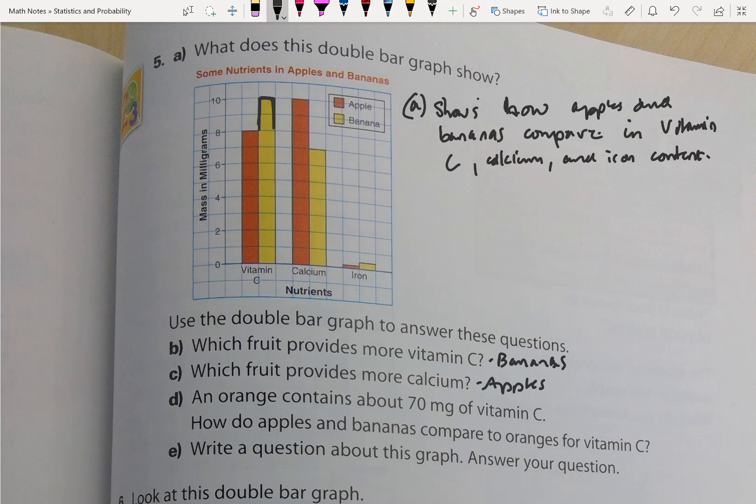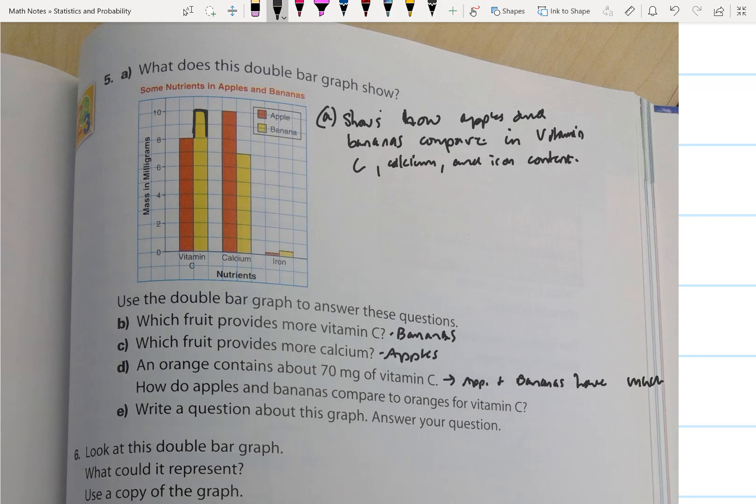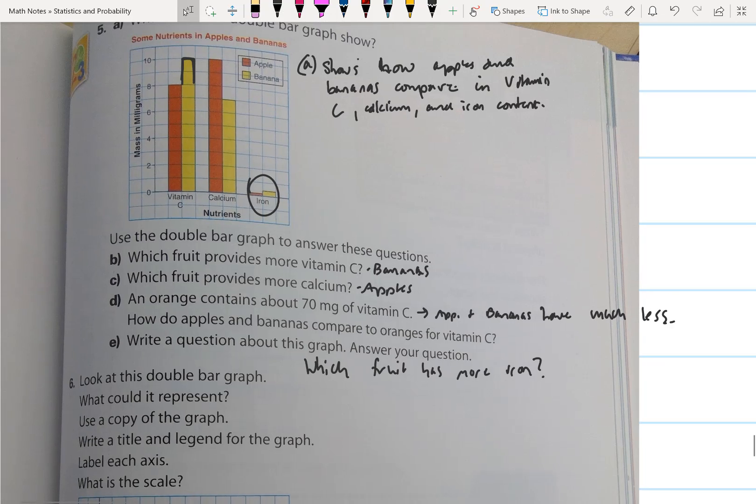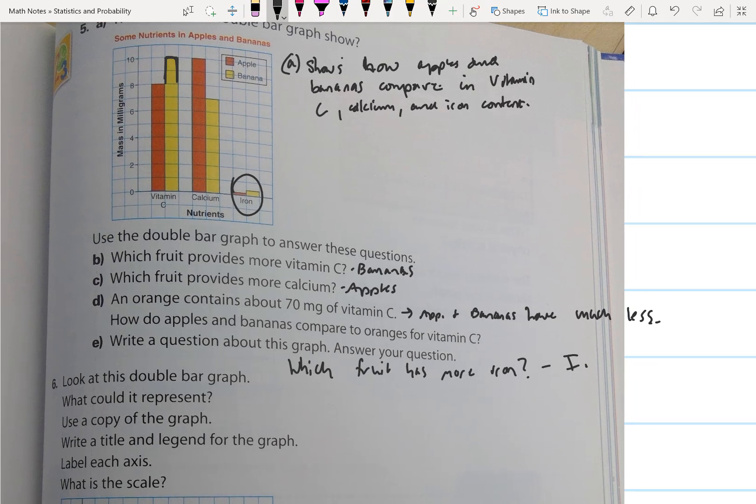Because there's only eight for apples and ten for bananas. And question E: Write a question about this graph and then answer your question. How about which fruit has more iron? I'm asking a question about these two bars here, and we can see that the answer is bananas. Bananas have more iron than apples.